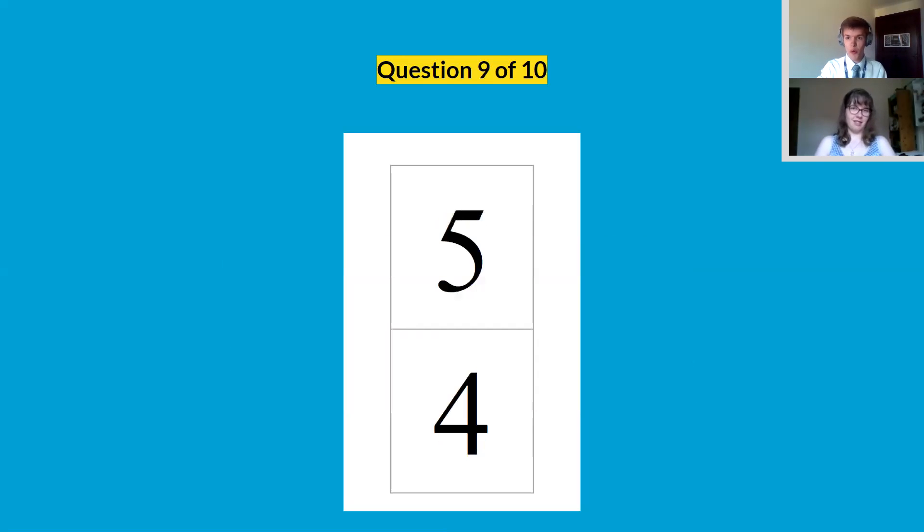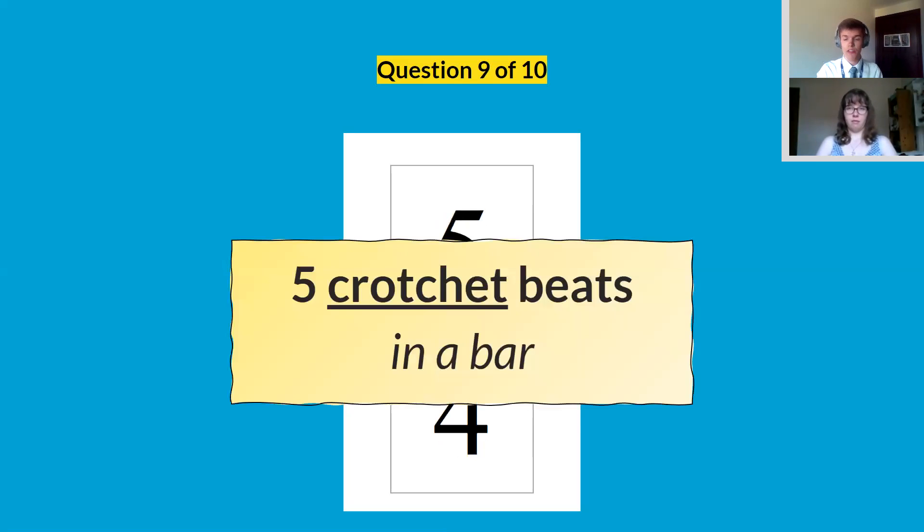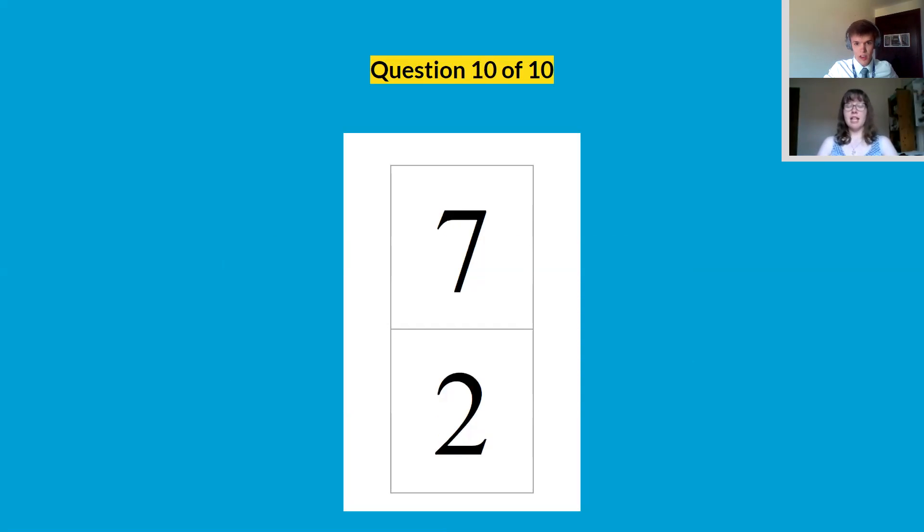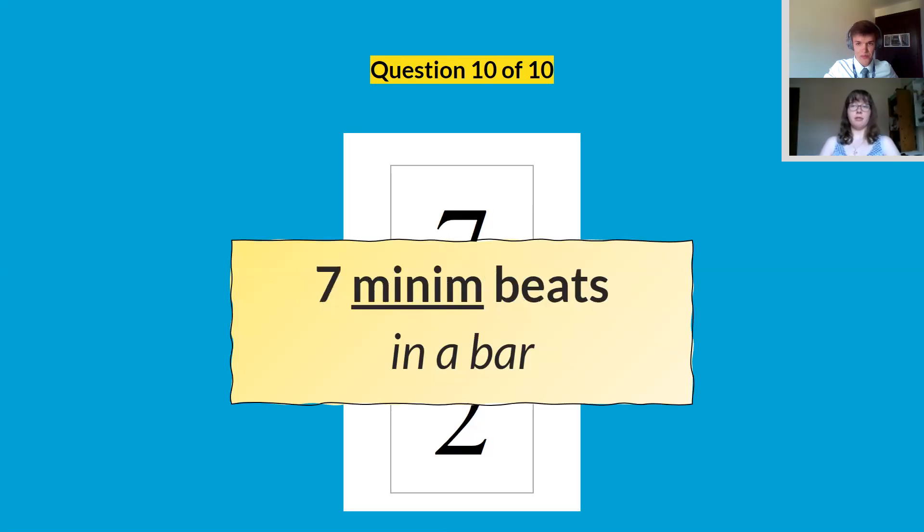Now, I put two what we call irregular time signatures at the end here. We don't see them very often, but I did them really to make the point that we can have any number as the top number. So five, four is five crotchet beats in a bar. It's exactly the same pattern. It might look a little bit weird because we don't see it very often. But that's what five, four is, five crotchet beats. And finally, question ten, seven minims in the bar. So it'll feel very off-centred. It won't feel like it fits into a bar. It'll feel very weird.